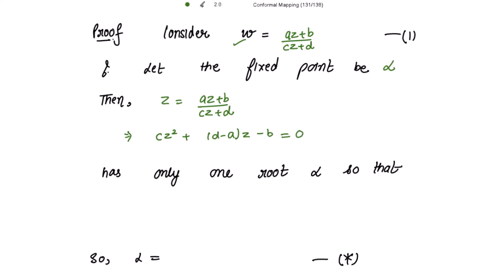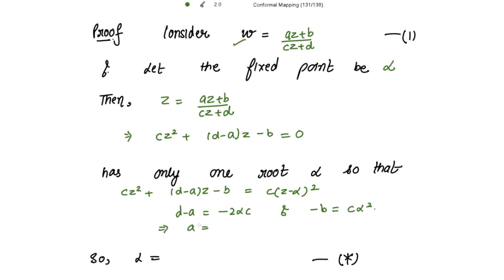Now as this quadratic equation in z has only one root α, the equation can be written as c(z - α)² = 0. Comparing coefficients of z from both sides, we get d - a = -2αc, and equating constant terms: -b = cα². This implies a = d + 2αc and b = -cα², and also α = (a - d)/(2c). Please mark this as star — we need this later.